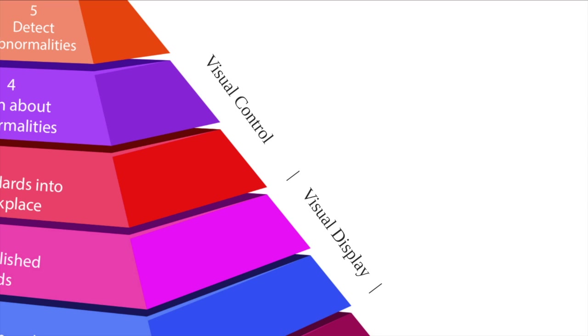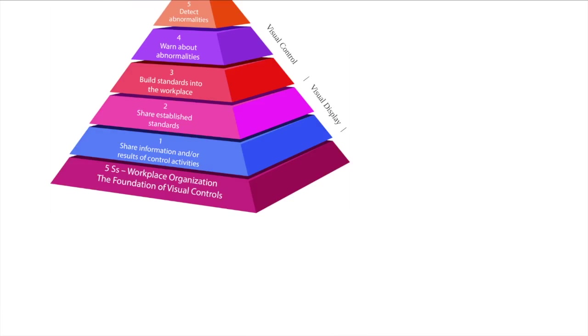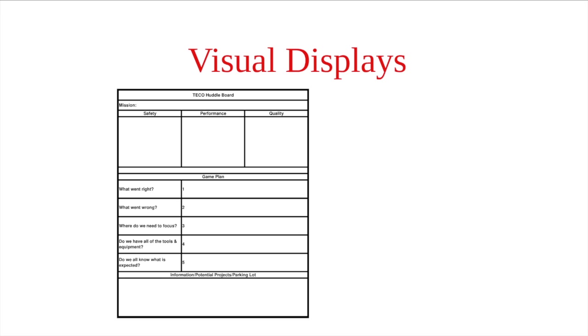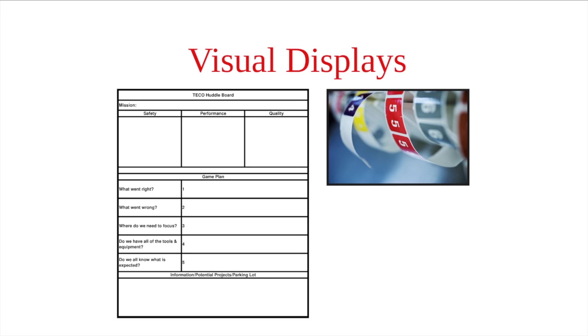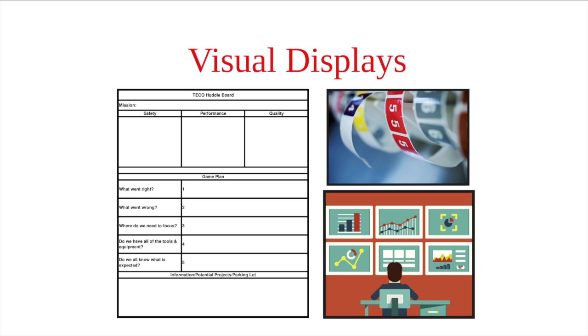Both are important techniques to use when implementing visual management with any process. Visual displays communicate important information, but they don't control what people or machines do. Examples of visual displays are huddle boards, labels, tags, and dashboards.